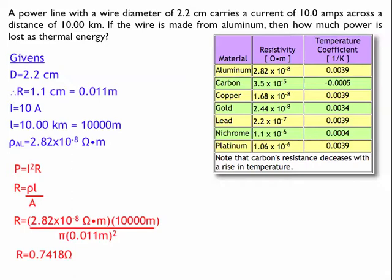So my wire is a resistance of 0.7418 ohms. Now I can find the power that's dissipated through heat, or thermal energy, by using P equals I squared R. So P is equal to 10 amps squared times 0.7418 ohms, and that tells me that the thermal energy loss is 74.18 watts.